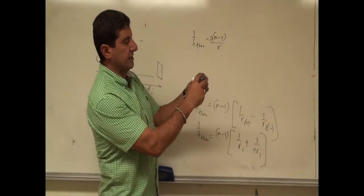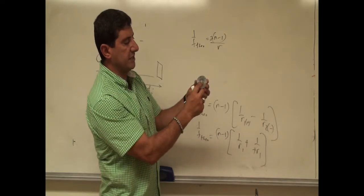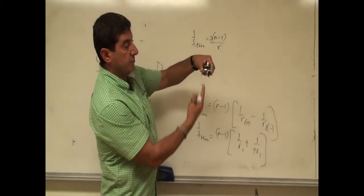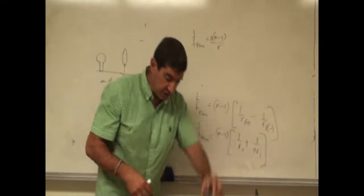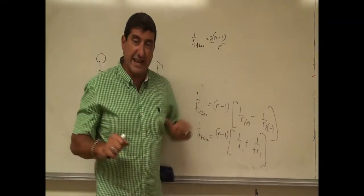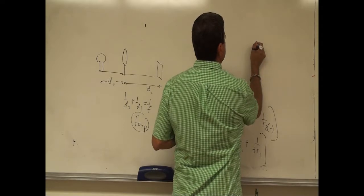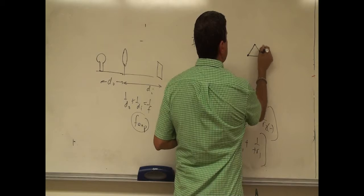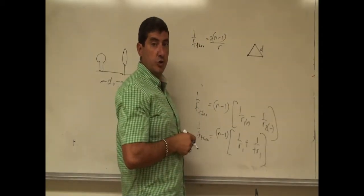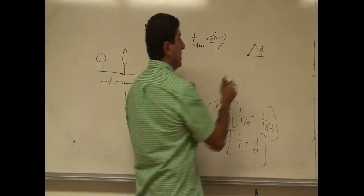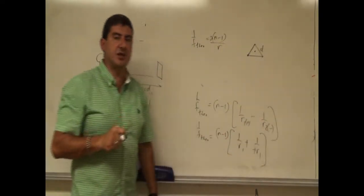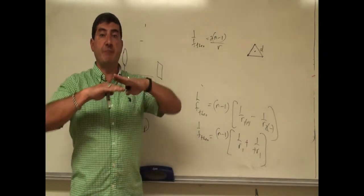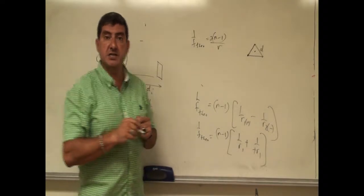The spherometer comes as a tripod with three legs arranged in an equilateral triangle, and right in the middle is a movable arm that I can move up and down. First I'll put this on a flat surface to get a baseline reading. I need to measure the distance between the legs — since they're all equal, I only need to measure one. The middle arm is right in the center of that equilateral triangle.